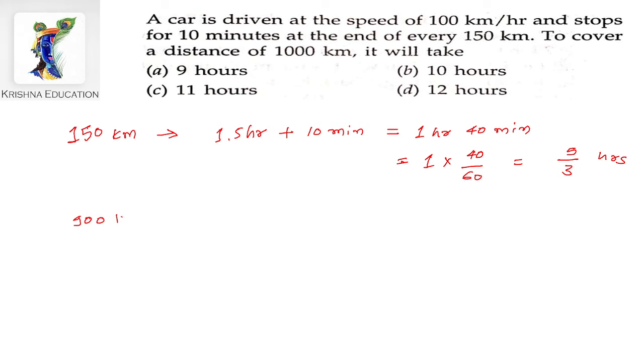For 900 km distance, the time required would be 900 divided by 150 into 5 by 3, which is equal to 10 hours.